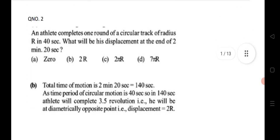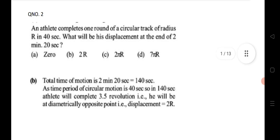Second question: an athlete completes one round of a circular track of radius R in 40 seconds. What will be the displacement at the end of 2 minutes and 20 seconds? We know that 2 minutes and 20 seconds equals 140 seconds total. The total displacement is 2R.